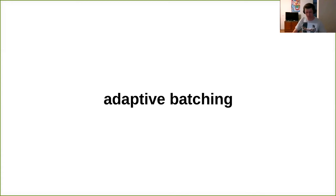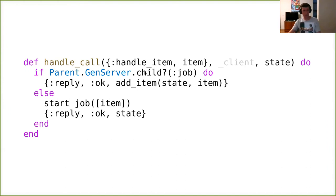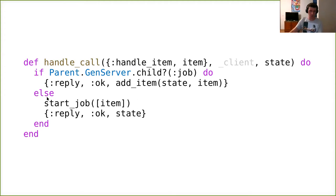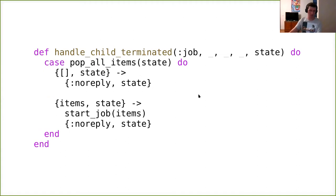If the producer is much faster — say it produces twice as fast — the consumer adapts by increasing the batch. In the code sketch: consumer is a parent, and the actual processing is started as a one-off child task. In handle_call for handle_item: if the child with the given ID is already running, we store the incoming item in our state, enqueuing it. Otherwise, we're idle and we start the job with this single item in the batch. That's the first part.